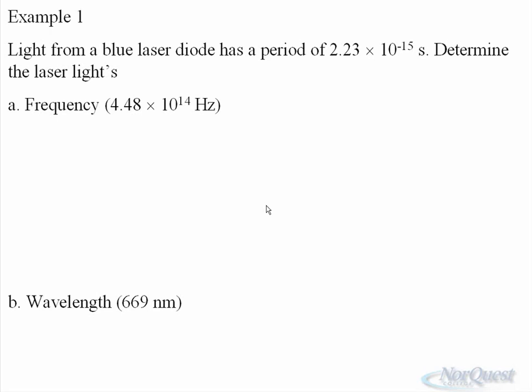Light from a blue laser diode has a period of 2.23 times 10 to the negative 15 seconds. Determine the laser light's properties.